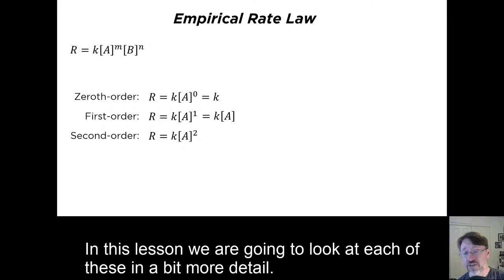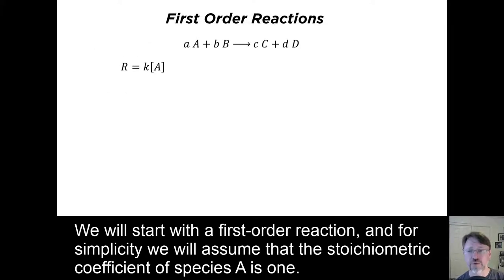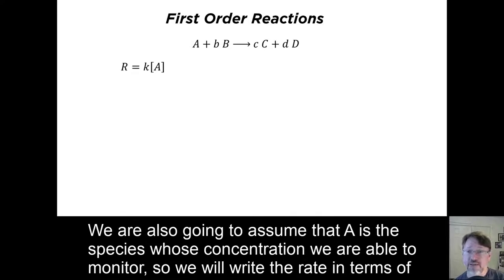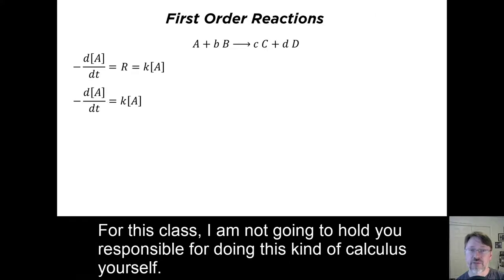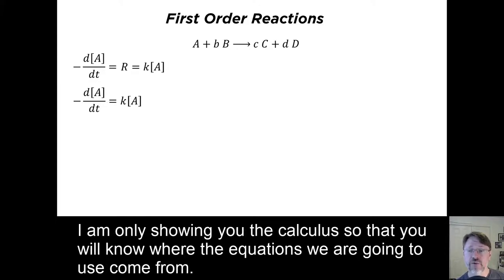In this lesson, we are going to look at each of these in a bit more detail. We will start with the first order reaction, and for simplicity, we will assume that the stoichiometric coefficient of species A is 1. We are also going to do a bit of calculus. For this class, I'm not going to hold you responsible for doing this kind of calculus yourself — I'm only showing you the calculus so that you will know where the equations we are going to use come from.